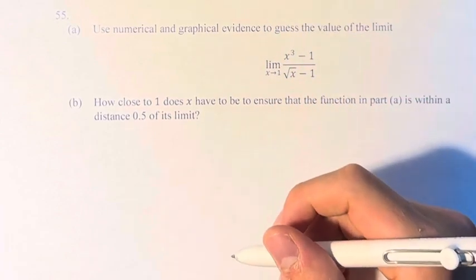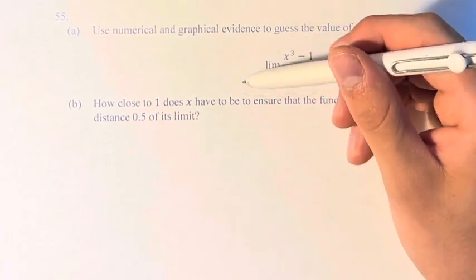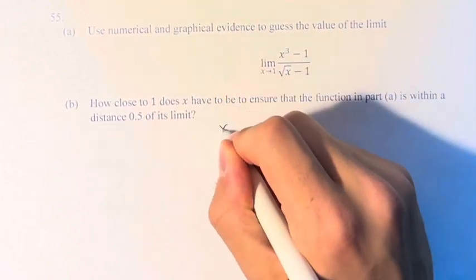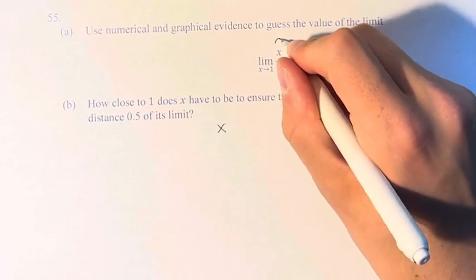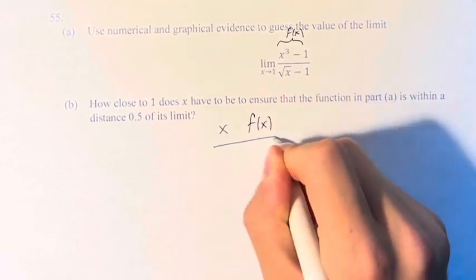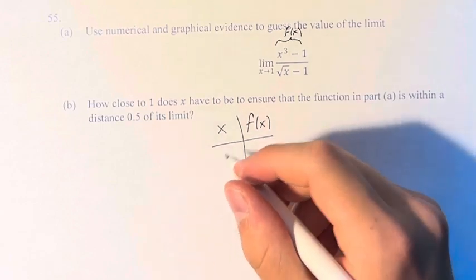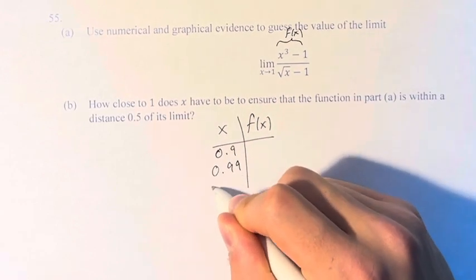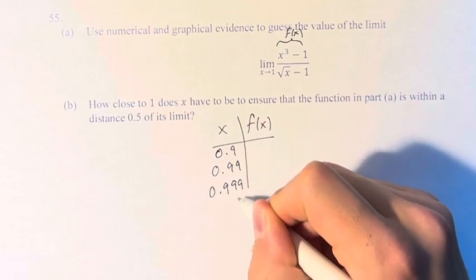So first, numerical evidence. As x approaches 1, we have to plug in values getting closer and closer to x and take the value of this function, which we can call f of x. So if we take x at 0.9, 0.99, 0.999, values getting closer and closer to 1...